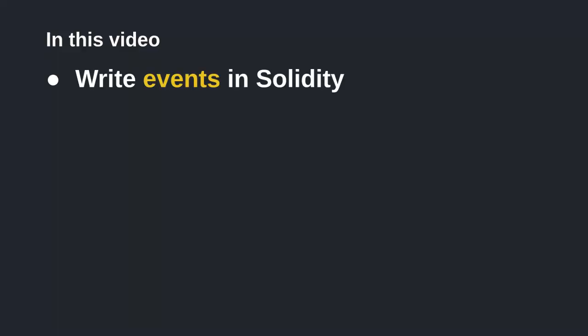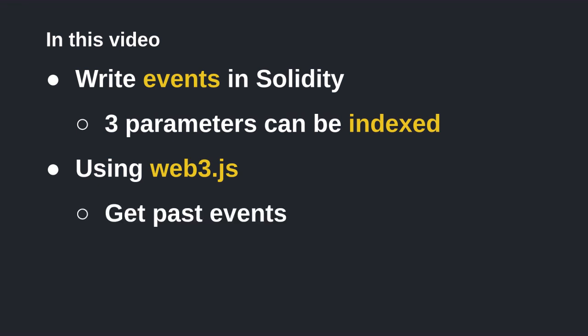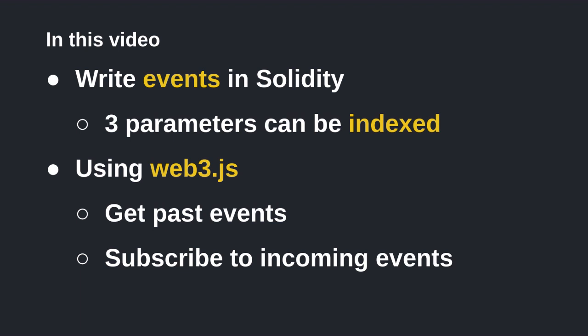In this video, I showed you how to write events in Solidity. You can pass in parameters into an event, and up to three of the parameters can be indexed. By indexing a parameter, you'll be able to quickly filter out past events. Using Web3.js, I showed you several demos of how to get past events and how to subscribe to incoming events. I'll upload this code onto GitHub and provide the links in the description below. Thanks for watching and I'll see you next time.